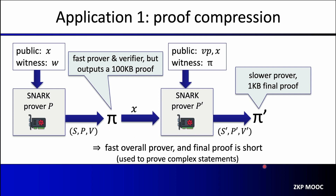This is very useful for proving very complex statements, and it comes up quite a bit when doing proofs for things called a ZKEVM — when we're trying to prove a large execution of the EVM. When the verifier wants to verify that W exists, it will verify the recursive proof pi prime, and the proof pi will never be seen by the actual real-world verifier.